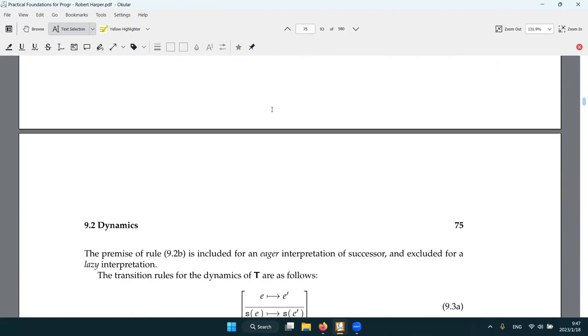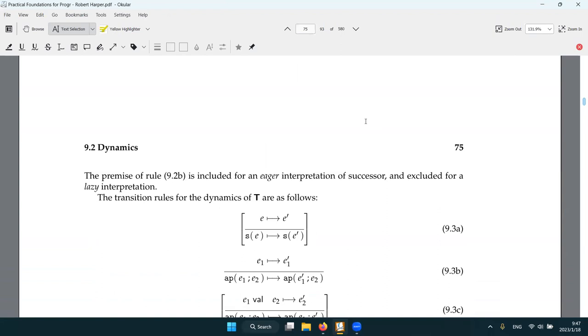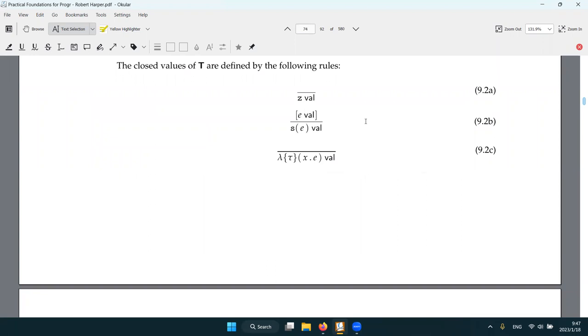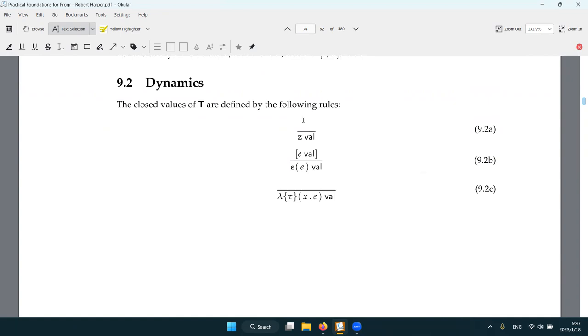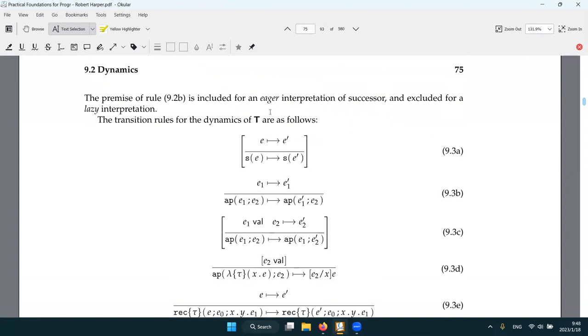And dynamic. This is eager interpretation. Because we need to evaluate the whole, whatever is inside to a value. And then only then we can see that S is a value. Otherwise, if inside S we still have some other stuff, then we need to evaluate them first. That's why this eager.